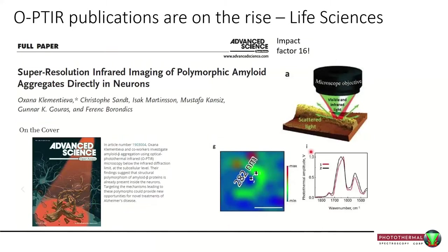From around 2020, another high-impact paper looking at neurons and protein secondary structure differences. I like this because it shows incredible resolution — even at around 282 nanometers — and how between those points you actually get real chemical differences. In this case, there's more beta-sheet structure at one of those points versus another.